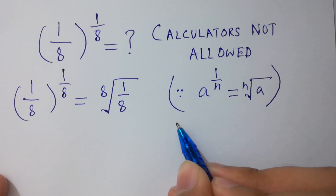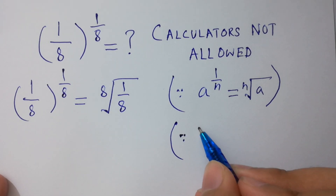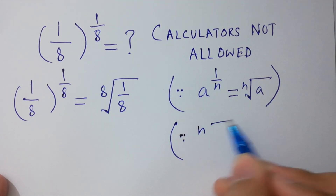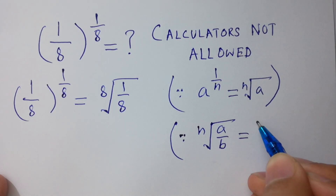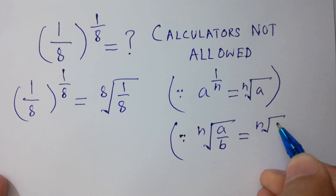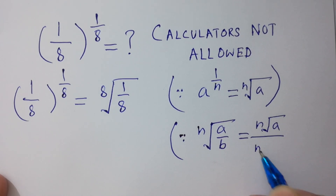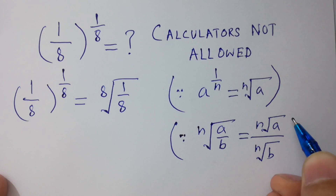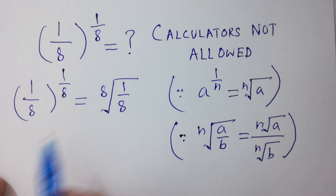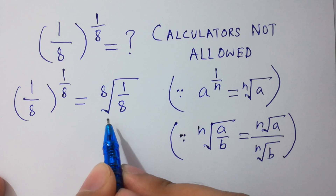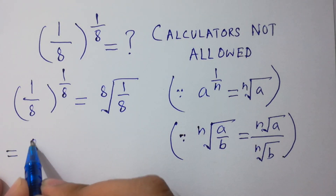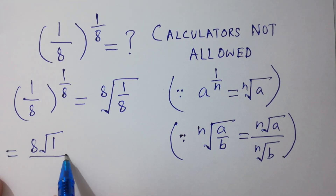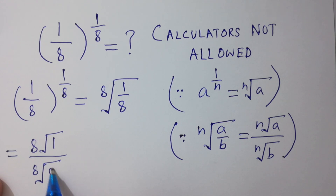In the next step, since the nth root of a over b equals the nth root of a over the nth root of b, we can write the 8th root of 1 over 8 as the 8th root of 1 over the 8th root of 8. Clear?